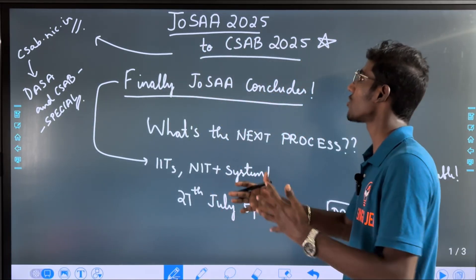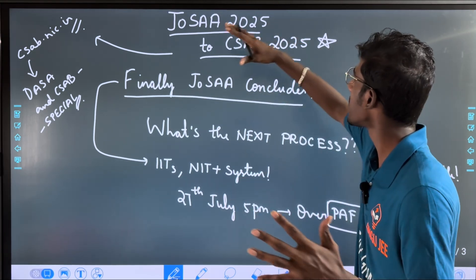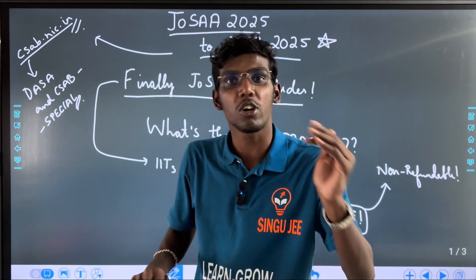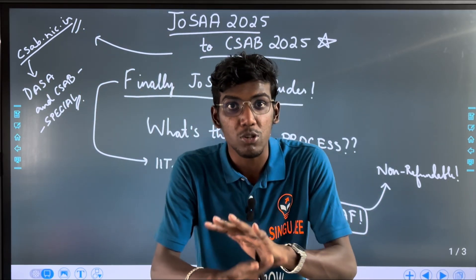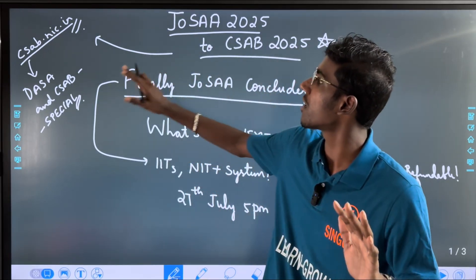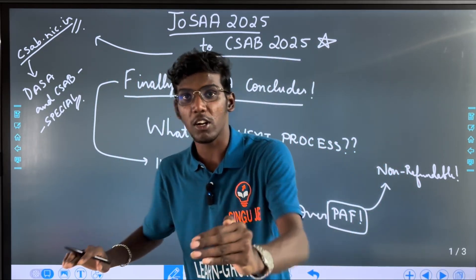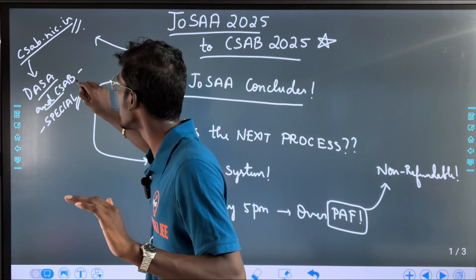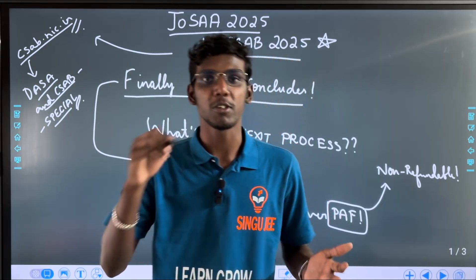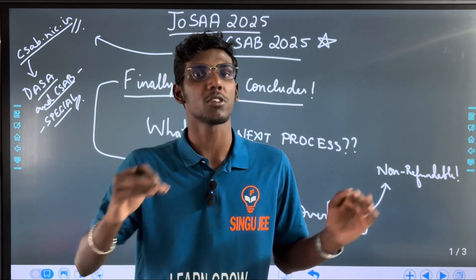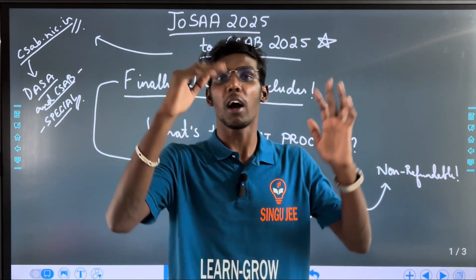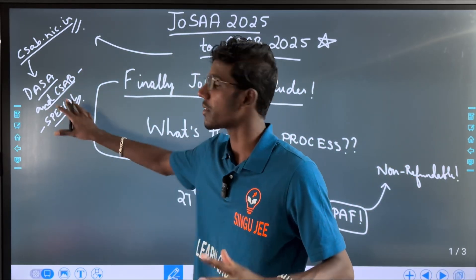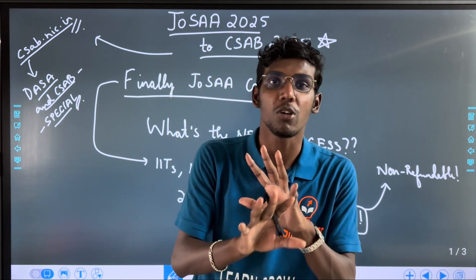So, how do you apply JOSA 2025 to CSAB 2025? The website is CSAI.nic.in — it's also called JOSA.nic.in. You can visit CSAI.nic.in. If you go to DASA and CSAB Special, click on the information process for CSAB Special, information process for DASA, next to candidate links — that is the website. Go to DASA and CSAB Special and click on the final website.